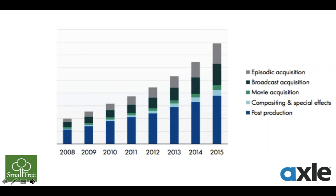This slide shows the recent history of storage requirements for video specifically. Something like 100 exabytes of storage went in this year into simply media applications — 100 exabytes, which is 100,000 petabytes or basically 100 million terabytes. And all that data doesn't just sit there. People start editing it, archiving it, ingesting it, then migrating it. Every time they do that, it hits the network — hence the need for ten gigabit.